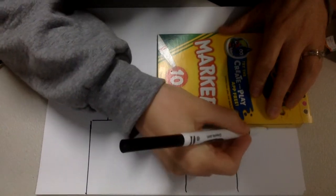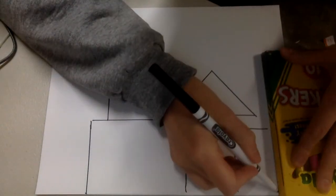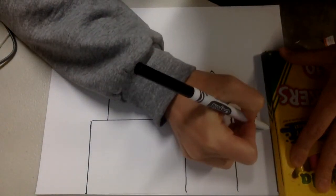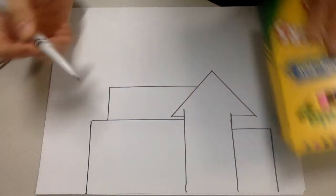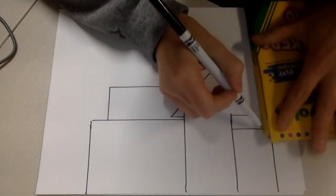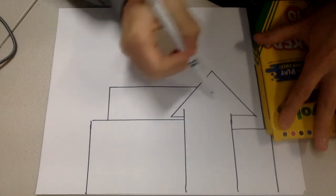So notice I'm just drawing the outside of the house. I'm not adding windows, I'm not adding doors, I'm just getting the basic shape drawn. And like I said, you can mix and match to create your own style house.